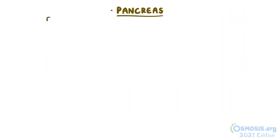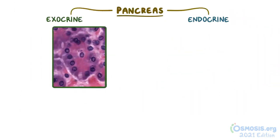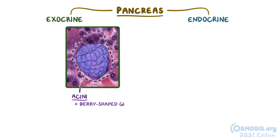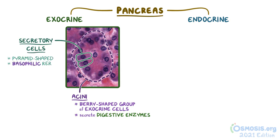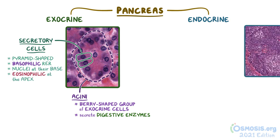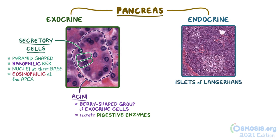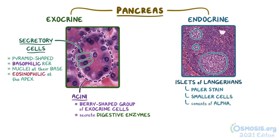As a quick recap, the pancreas has both exocrine and endocrine functions. Acini are the berry-shaped groups of exocrine cells that secrete digestive enzymes. The individual secretory cells are pyramid-shaped with basophilic rough endoplasmic reticulum and nuclei at their base, and eosinophilic granules at the apex. Islets of Langerhans are responsible for the pancreas' endocrine secretion, and are seen with H&E by their paler stain and smaller cells when compared to the surrounding tissue. The islets consist of alpha, beta, delta, and PP cells, with beta cells making up about 70% of the islets.